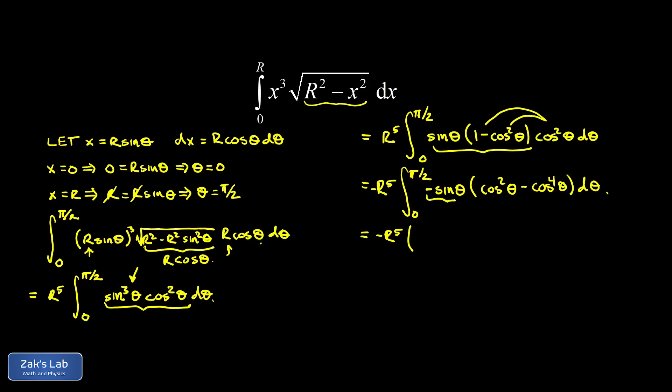When I have the derivative of the interior function, I can just apply the power rule to each of these. So I end up in the first term with a one-third cosine cubed theta, and in the second term, a one-fifth cosine to the fifth theta. Now this is all evaluated from zero to pi over two.